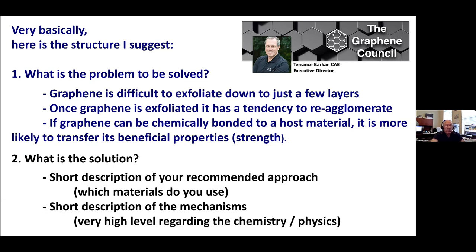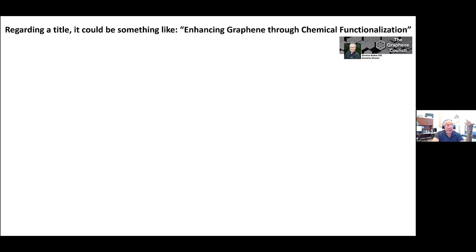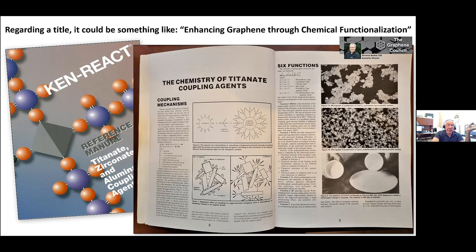What is the solution? Give them a short description of your recommended approach: which materials are you going to use, give them the idea of the mechanisms, and what are the next steps — how do you want to work with these companies? And as a title, I would like to use 'Enhancing Graphene Through Chemical Functionalization.' I agreed with that because from the moment I started getting into this technology, I was trying to understand what the hell is going on. I developed this concept of six functions trying to describe how we can reduce the viscosity at the same time increase the mechanical properties — that's so opposite to plasticizer logic.